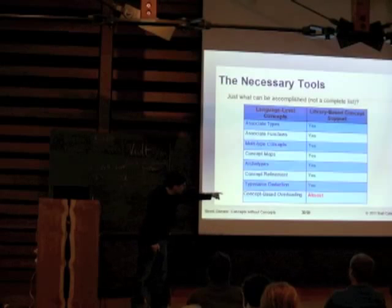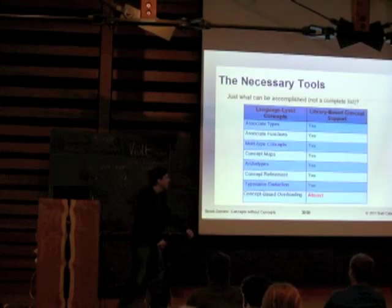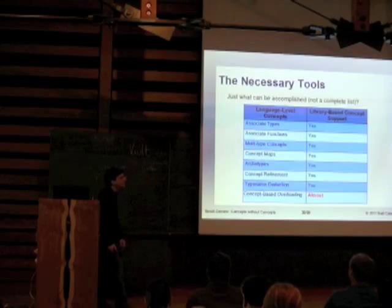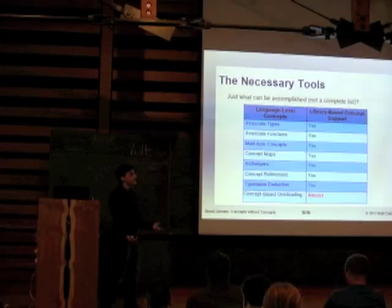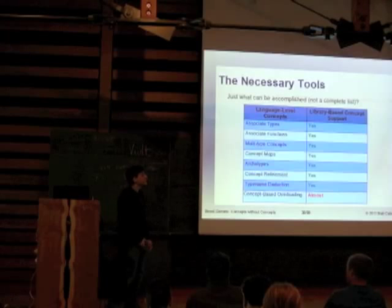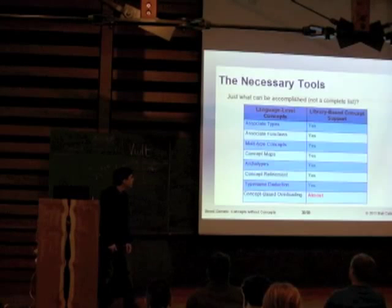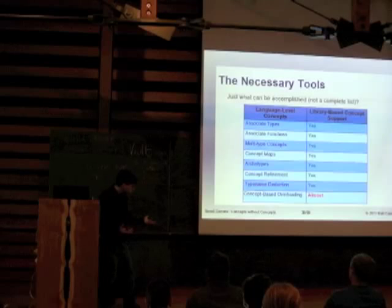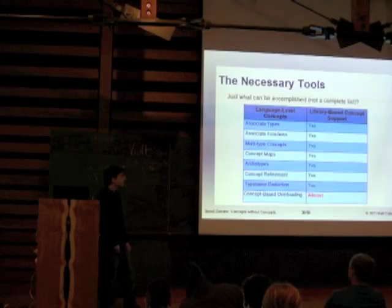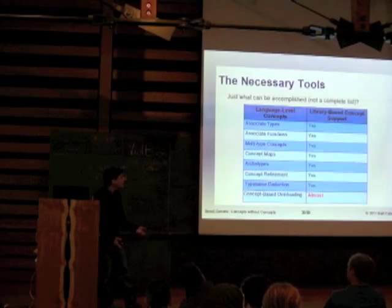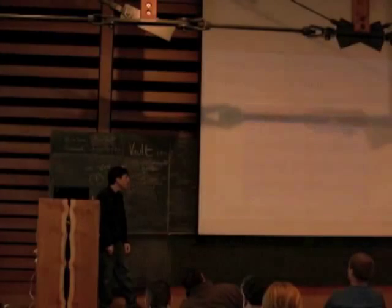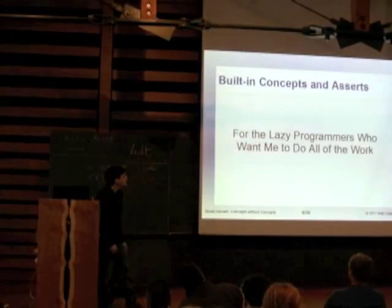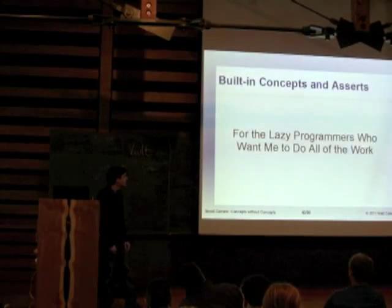So the conclusion is: I can kind of do concept-based overloading, but you require some kind of stub function, so it's ultimately just tag dispatching underneath the hood. But at the very least, you don't have to come up with iterator tags or anything like that yourself, and it works with all concepts, not just iterators.